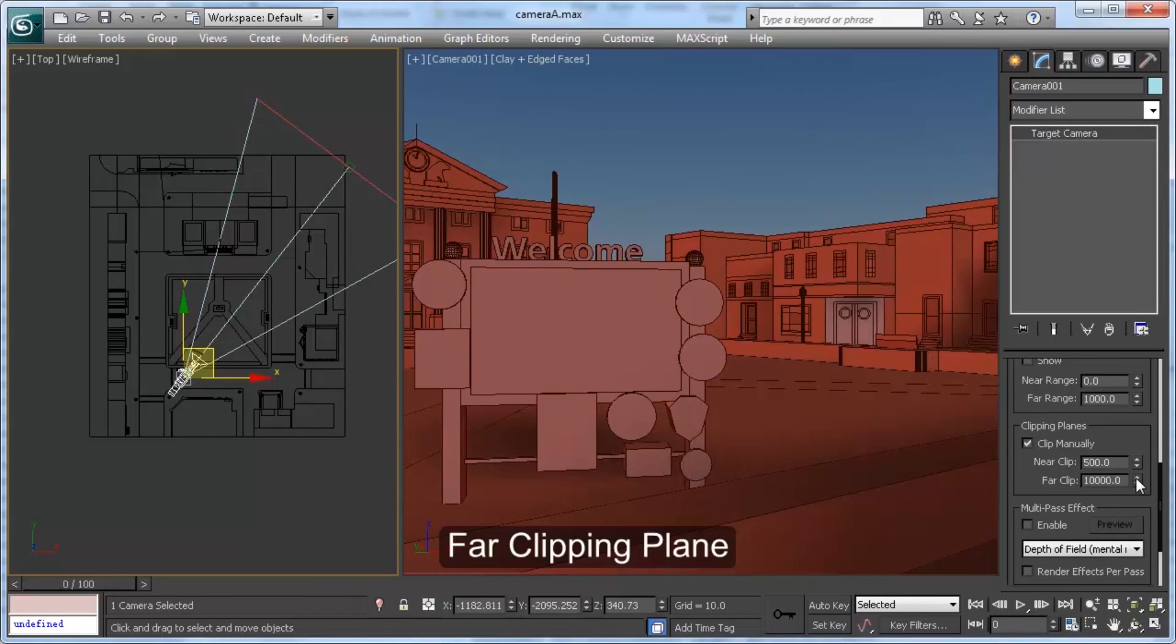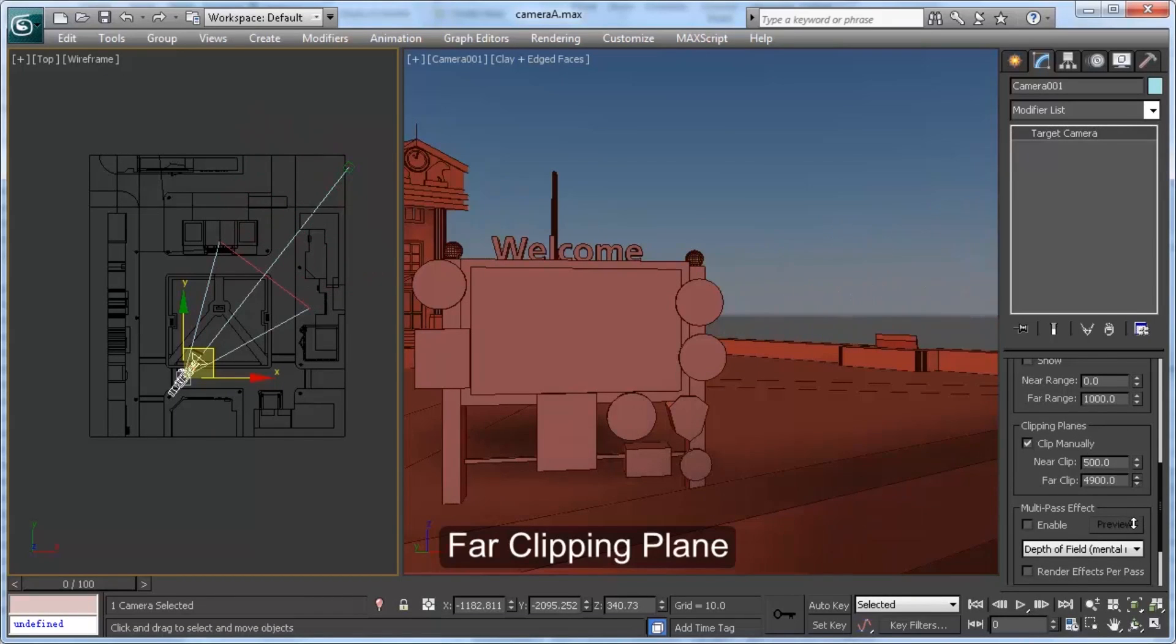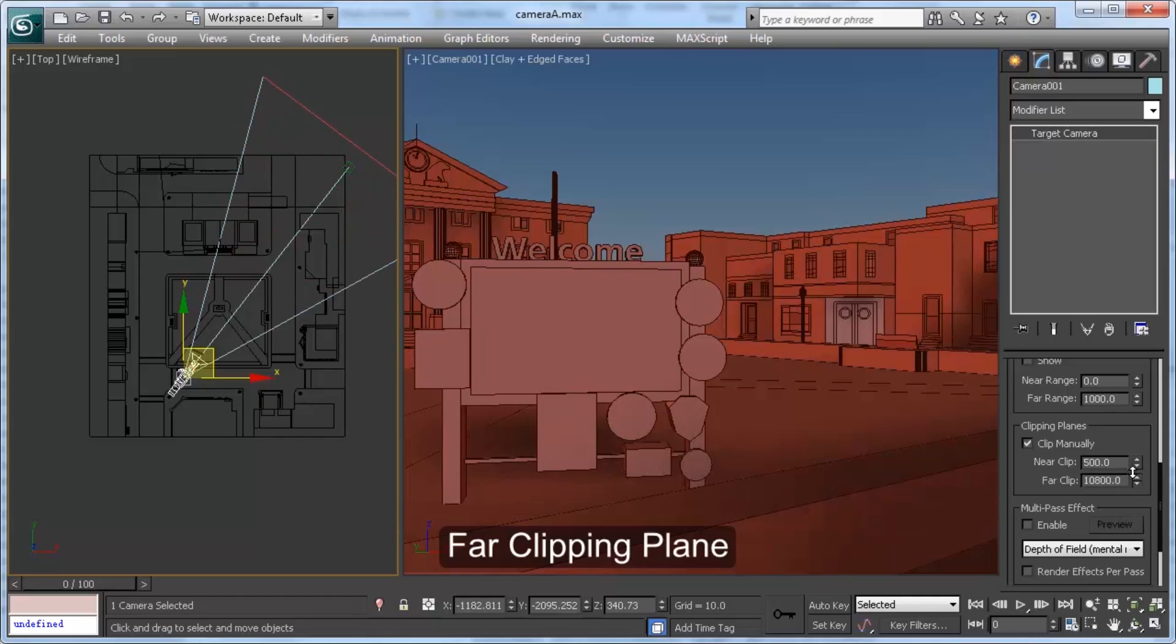Here you can see the effect of moving the near and far clipping planes through the scene. Seeing this kind of clipping is usually a bug, not a feature.